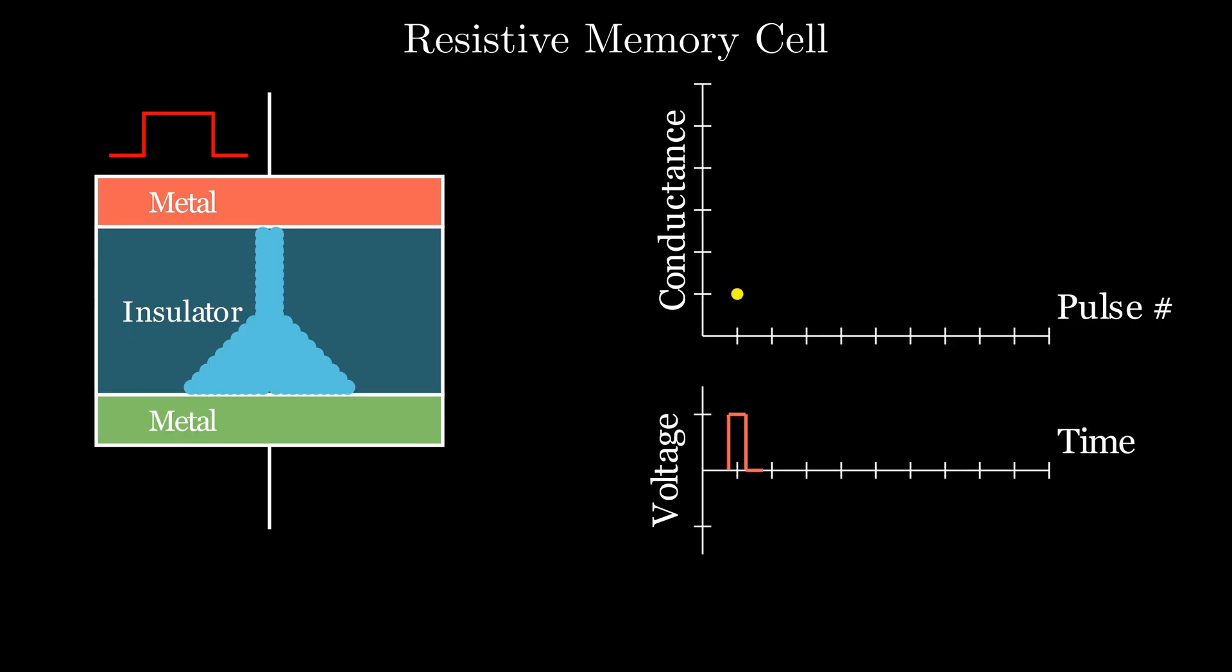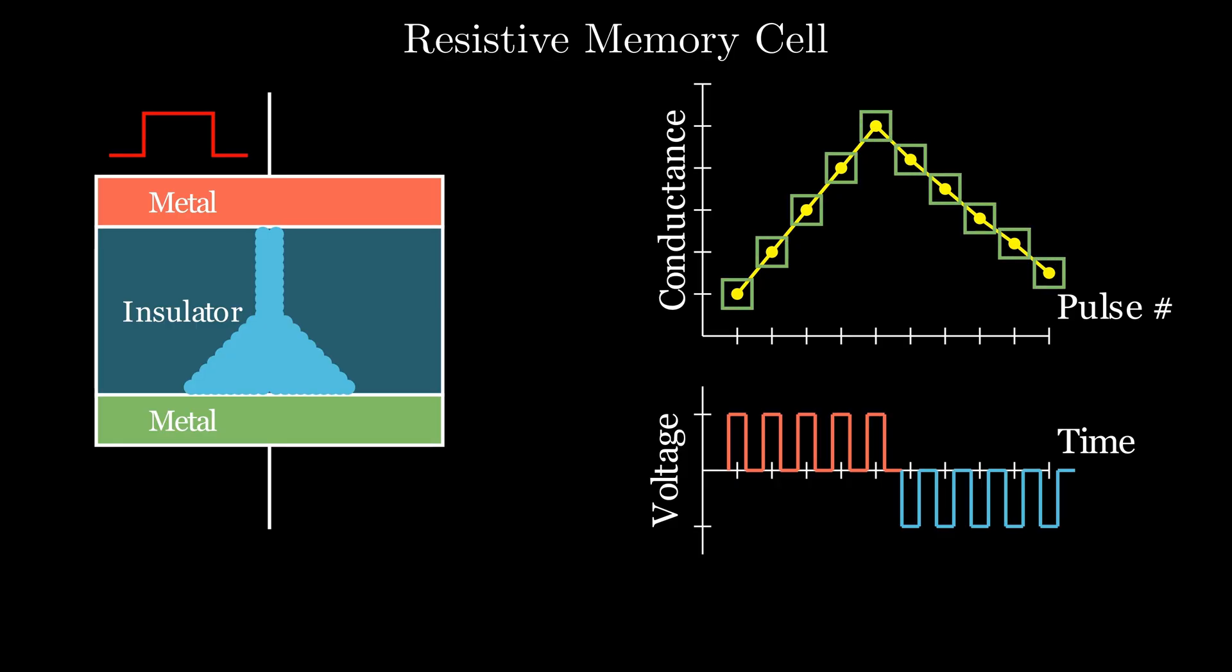By changing the number and polarity of the voltage pulses, the conductance of the device can be increased or decreased in a controlled and predictable way. Different levels of conductance can then be used to store both digital and analog values. But here's where it gets interesting.